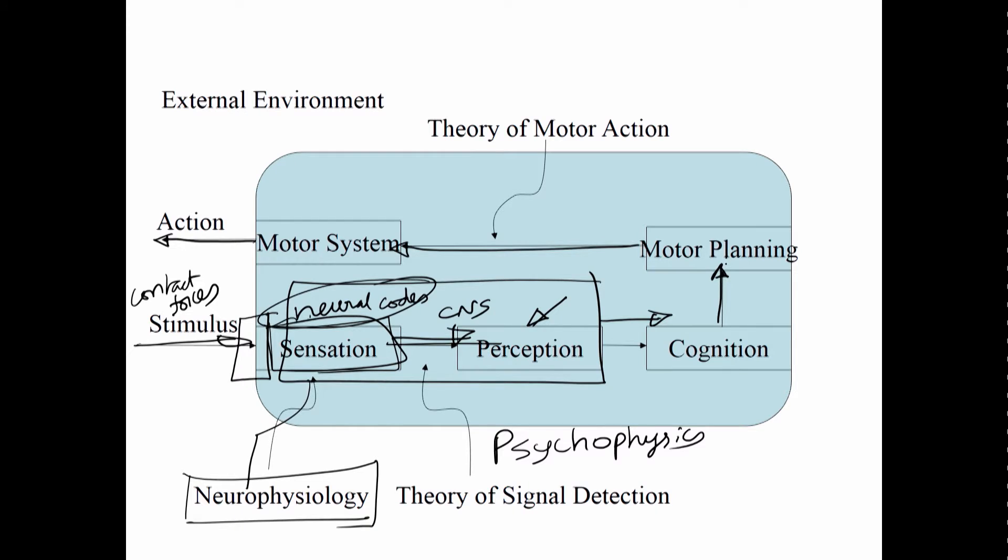Once we have cognition then we do the motor planning. Motor planning itself is a big subject and then how motor planning is executed into the motor action, again there is a theory of motor action. There is again another specialized subject. How motor system is working in our human body can be part of the biomechanics, that is again another course which is offered in our department.